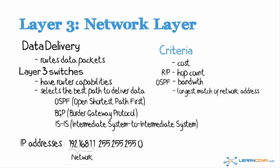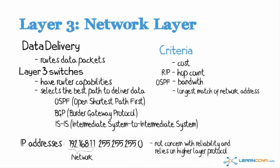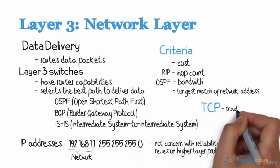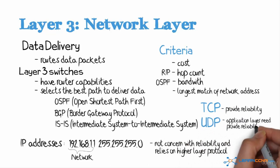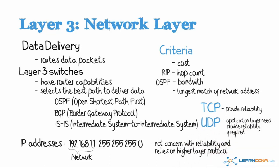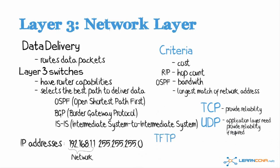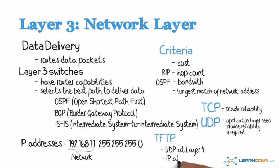There's no reliability at the network layer. IPv6 is not concerned with reliability, and relies on higher layer protocols such as TCP to provide reliability. Or, if UDP is used, the application layer needs to provide the reliability if it's required. As an example, when using TFTP, TFTP uses UDP at layer 4 and IPv6 at layer 3, but the TFTP application provides the reliability, because there's no reliability in UDP or in IPv6. So IPv6 does not provide any reliability or retransmission of packets.